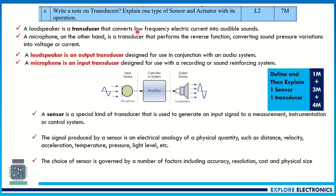Write a note on transducers and explain one type of sensor and actuator with its operation. They ask to write the note on transducer first. A transducer is a device which converts one form to another — usually a non-electrical form to electrical form, and electrical form to a physical quantity. There are two types. You can explain the types of transducers using loudspeaker and microphone as examples. The microphone acts as a sensor, and the loudspeaker acts as an actuator. You can also take a temperature sensor as an example — when the temperature reaches some point, a buzzer can be connected as an actuator. This carries seven marks.